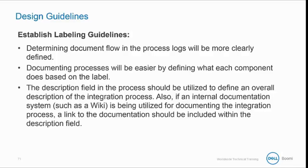Establish labeling guidelines. Determining document flow in the process logs will be more clearly defined with established labeling guidelines. Also, documenting processes will be easier by defining what each component does based on the label. The description field in the process should be utilized to define an overall description of the integration process. If an internal documentation system, such as a wiki, is being used, you can add a link to the documentation in the description field.